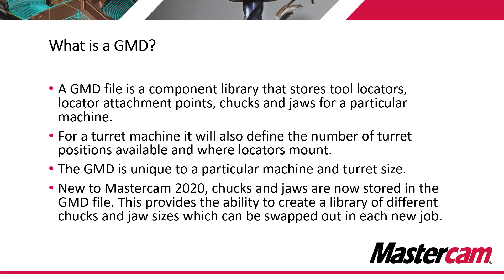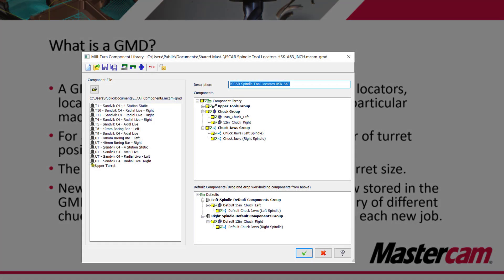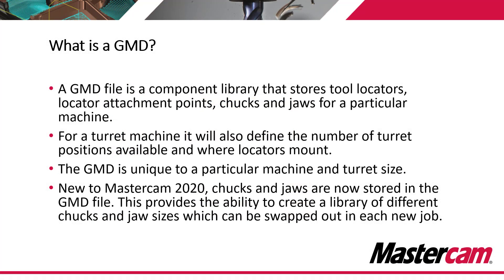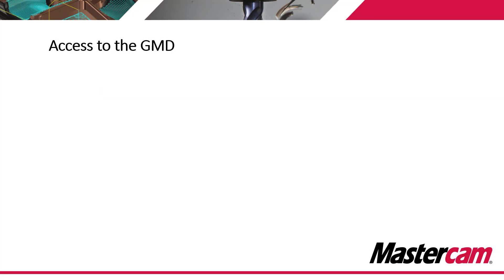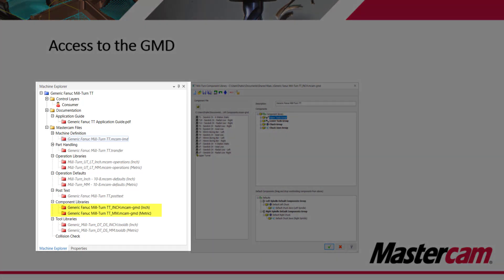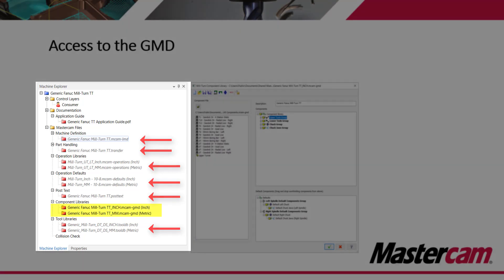New in Mastercam 2020, the chucks and jaws are now stored in the GMD file as well. This provides the ability to create a library of different chucks and jaw sizes that can be swapped out with each new job that you program in Mastercam Miltern. This is something new to Mastercam 2020. If you're familiar with the Codexpert window that opens up when you're utilizing Miltern, you can see on the left hand side that the component libraries or GMD files are now accessible by an end user. All the other elements are grayed out, which indicates that they're not accessible by an end user.